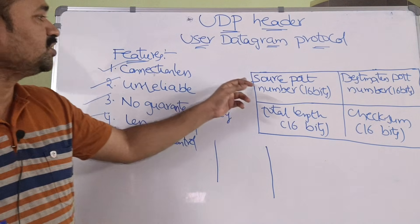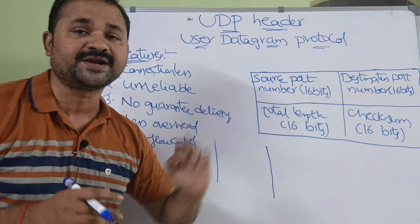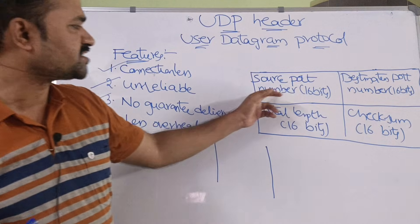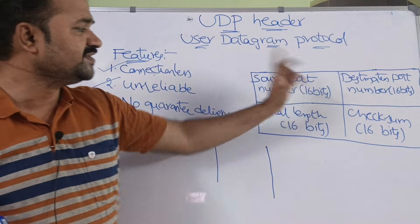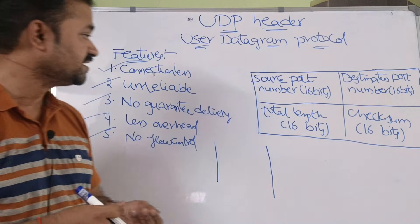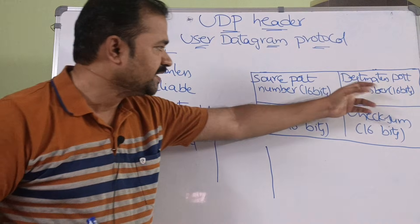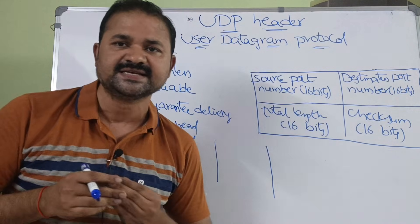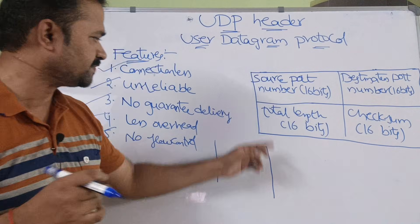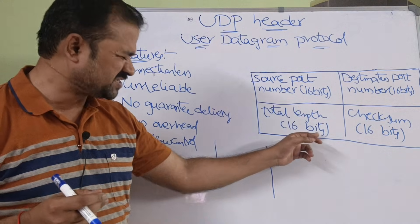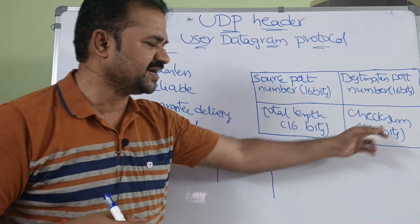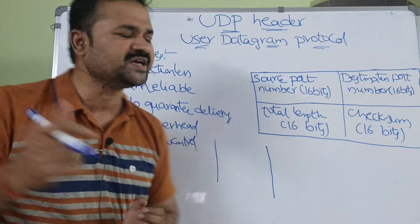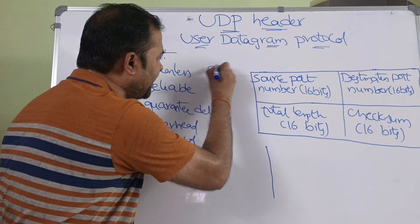Now, let us see about the header format of the UDP. Totally, we have four fields. The first field is source port number, which is of size 16 bits, that is 2 bytes. Destination port number, which is also 16 bits, so 2 bytes. Total length, 16 bits, 2 bytes. And checksum, 2 bytes. So, we can say that the size of the UDP header is 8 bytes.